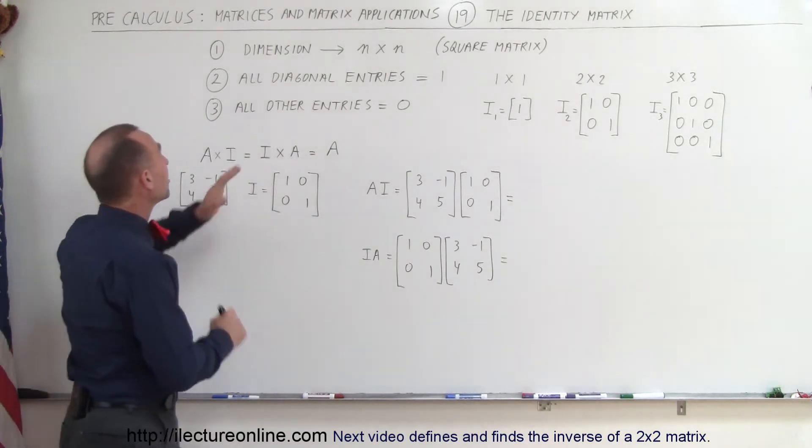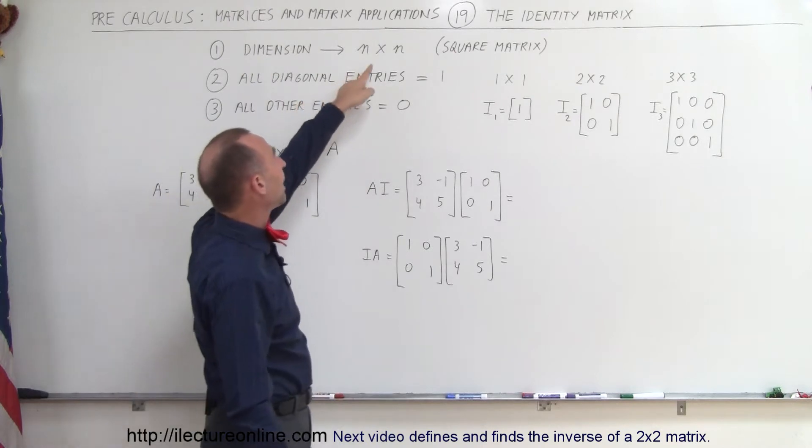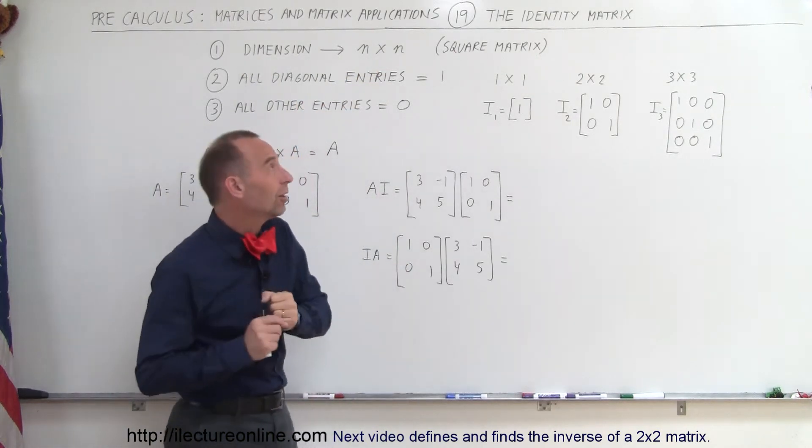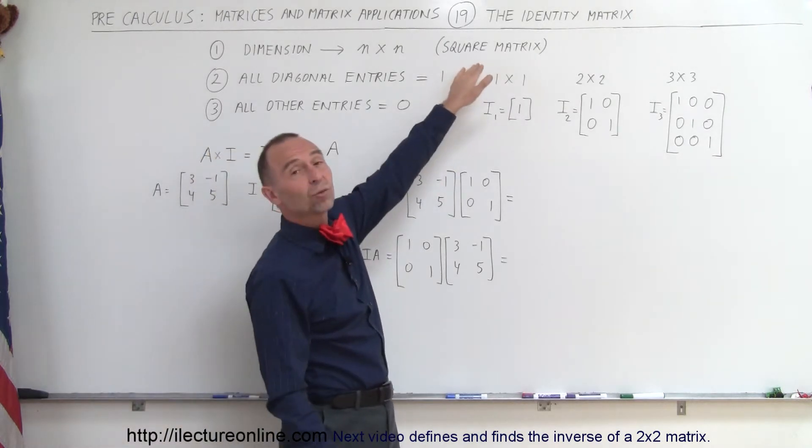First of all, the dimensions of an identity matrix is equal to n by n, which means it must have the same number of rows as it has number of columns. With other words, it must be a square matrix.